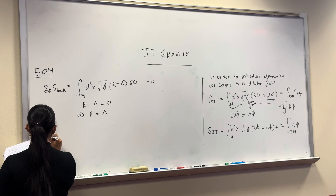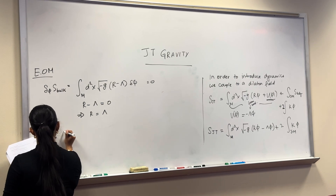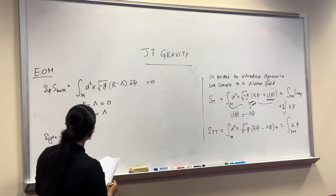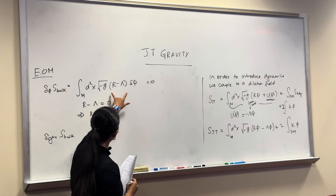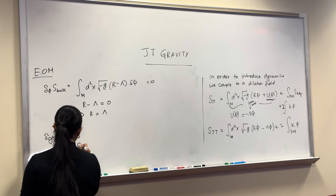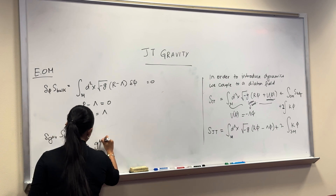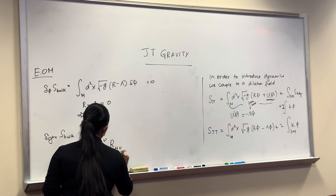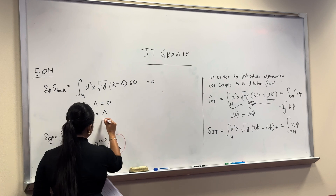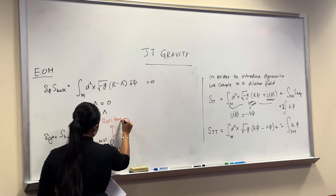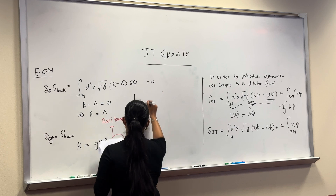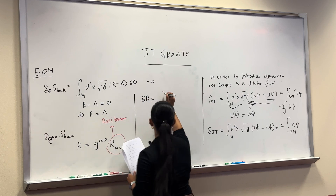Now we vary the action with respect to the metric. In order to vary with respect to the metric, we need to account for how R depends on the metric. We know that R, the Ricci scalar, is defined as the contraction g^{μν} R_{μν}, where R_{μν} is the Ricci tensor. So if we vary R with respect to the metric, we get a corresponding expression involving variations of the Ricci tensor.